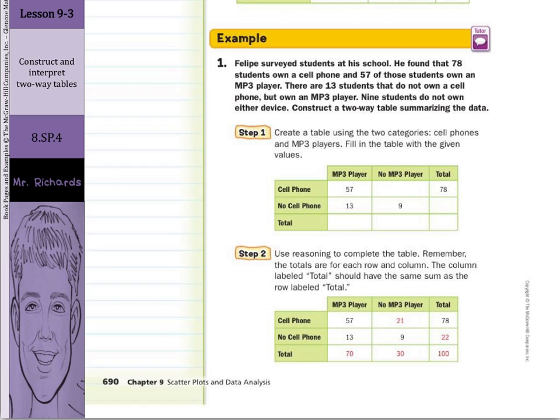So as we look to piece this together, we know that 78 students own a cell phone. So a total of cell phone is 78. 57 of those own an MP3 player. So 57 have a cell phone and an MP3 player. So that goes there. There are 13 students that do not own a cell phone but own an MP3 player. So that's 13 students that do not own a cell phone that have an MP3 player. And then nine students do not own either device. So no cell phone, no MP3 player goes here. So that's the information we know.